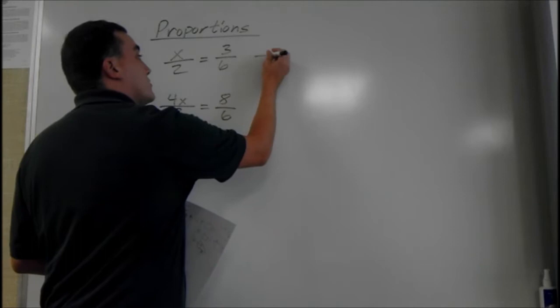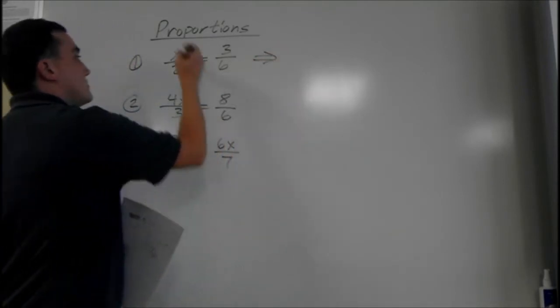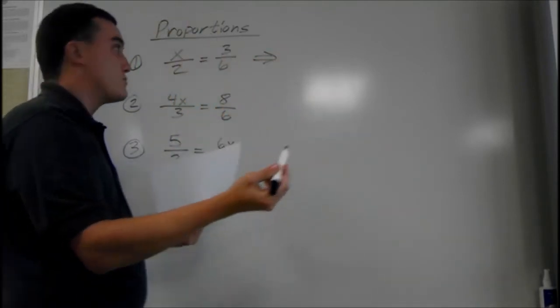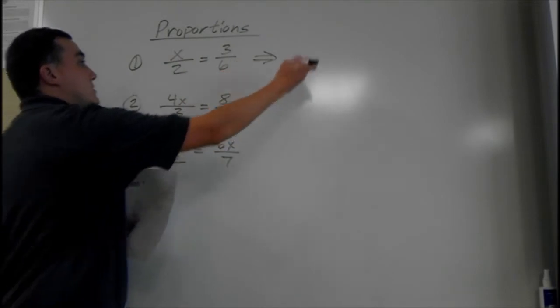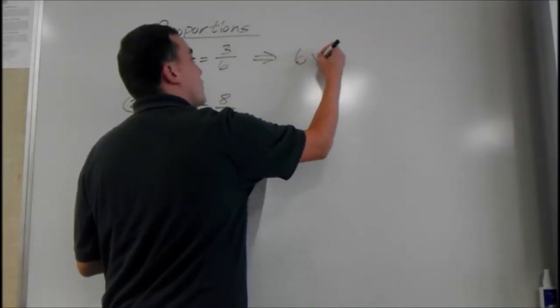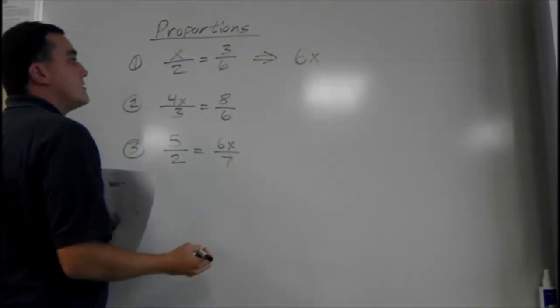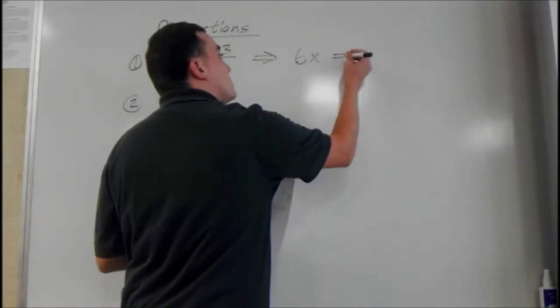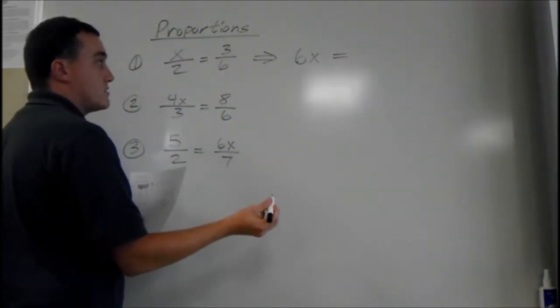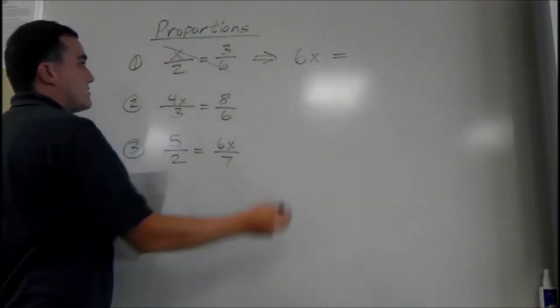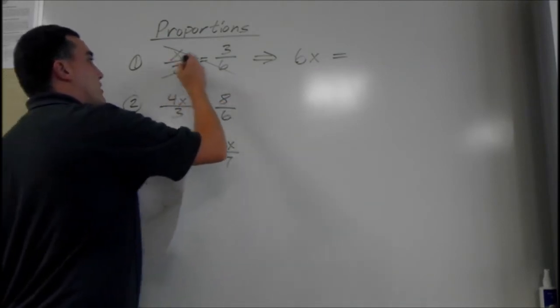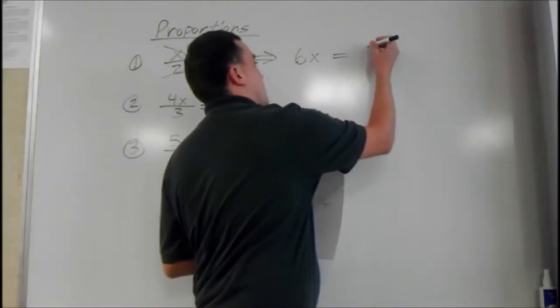To cross multiply, what you need to do is cross multiply. x times 6 is 6x. Always put the number before the letter and then set it equal to the other section. So we did x times 6. Now we need to do 2 times 3. 2 times 3 is 6 as well.